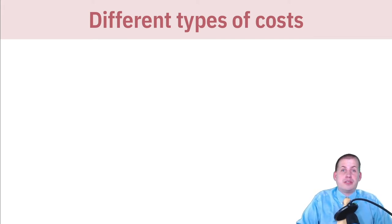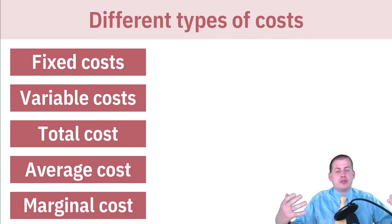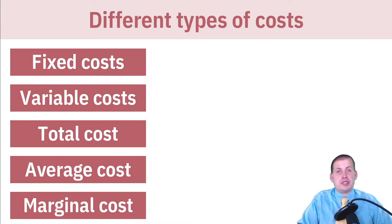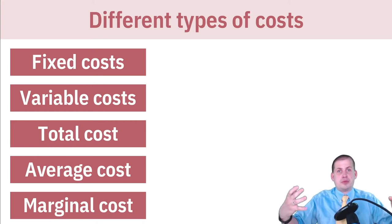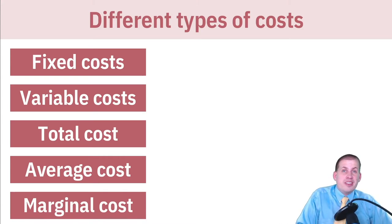With costs — every firm, when you create stuff, it costs money. You have to buy the inputs, then you have to pay people to change those inputs into outputs. Sometimes you have to pay money to advertise or to rent a space to sell your stuff. There are all sorts of costs involved when you're selling things.